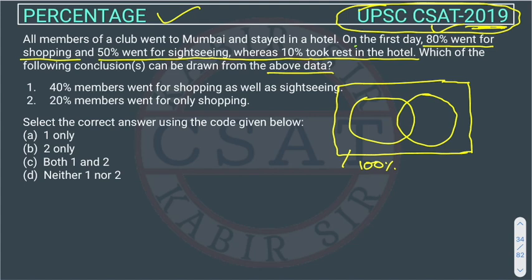If you want, you can consider any value like 100 and compute on that basis, but there is no need. Let's label the regions: this is A, this is B, this is C, and this is D. One circle is for shopping and the other circle is for sightseeing.